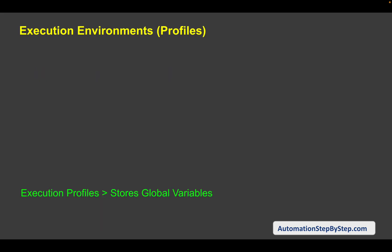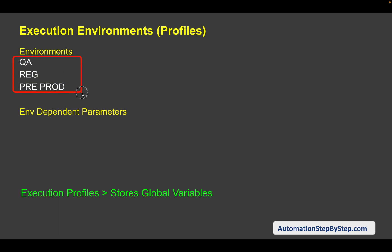Execution profiles, or environments in Katalon Studio, give us an option where we can store some variables at a global level and then use them in our test cases or anywhere in our project. In a real world scenario, we may have to run our tests on multiple environments — maybe QA, regression, staging, pre-production etc. Now the steps will remain the same. Let's say you are testing a login scenario — the steps remain the same.